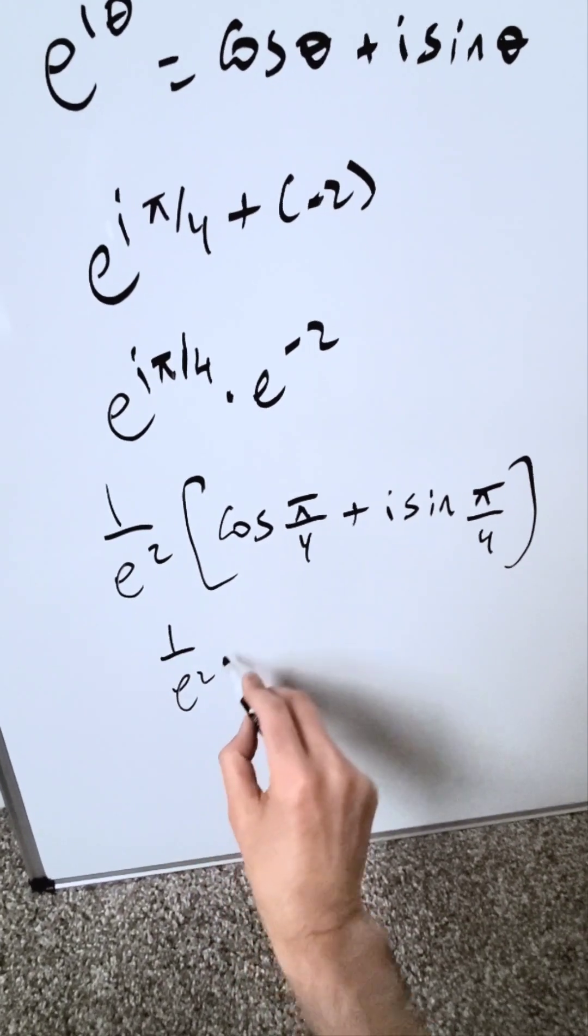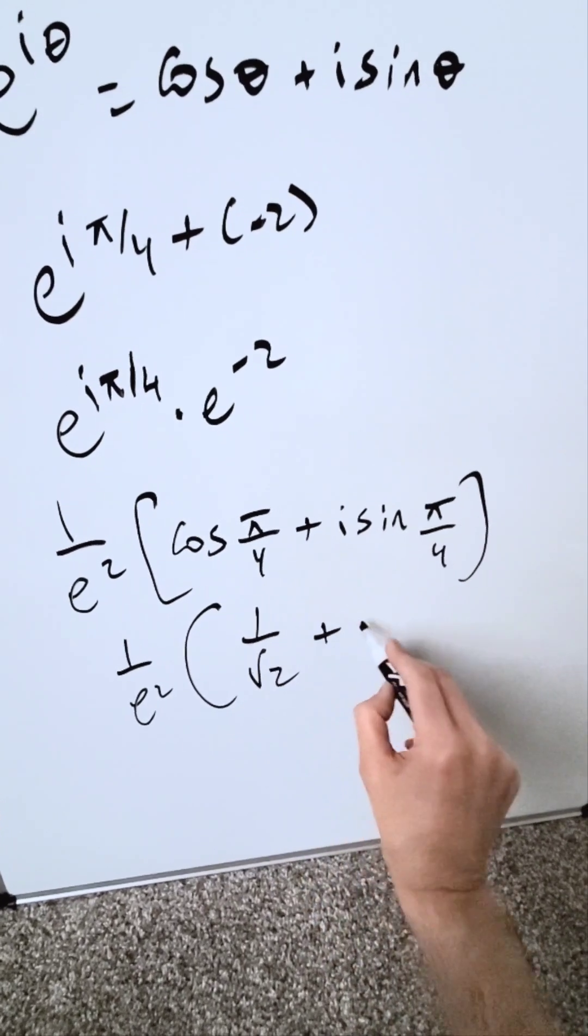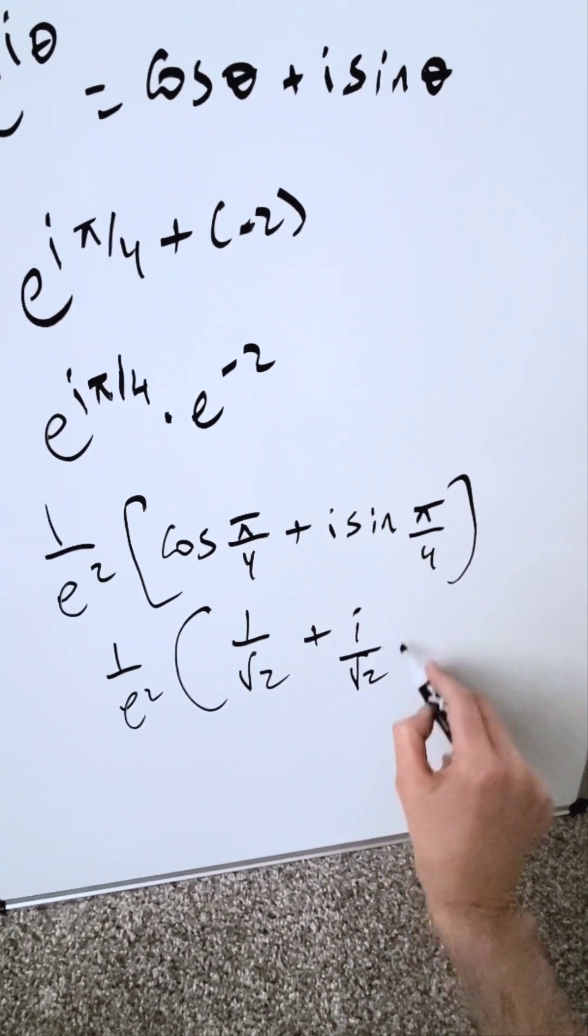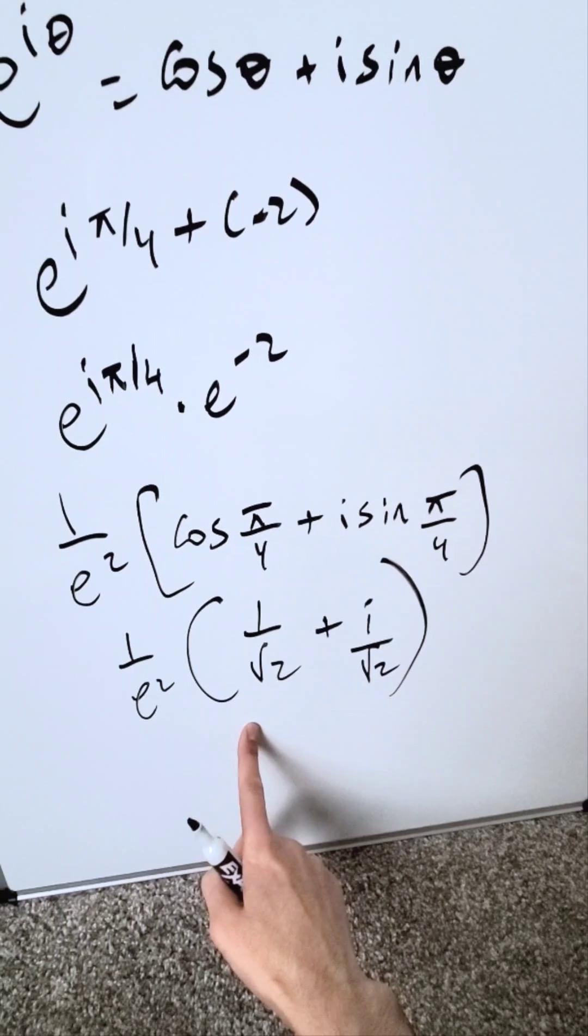I have 1 over e square, parentheses, 1 over root 2 plus i over root 2. And this right here will be your end result.